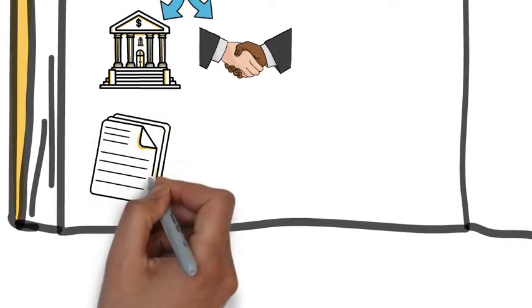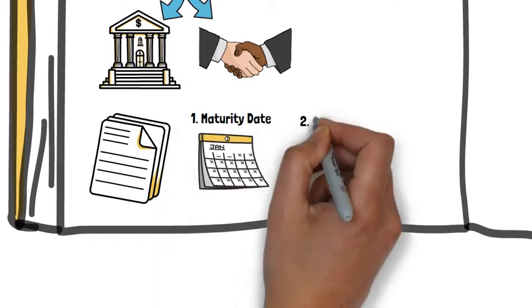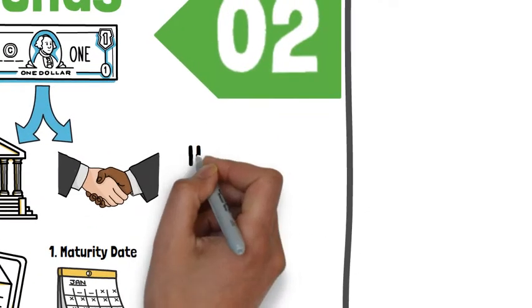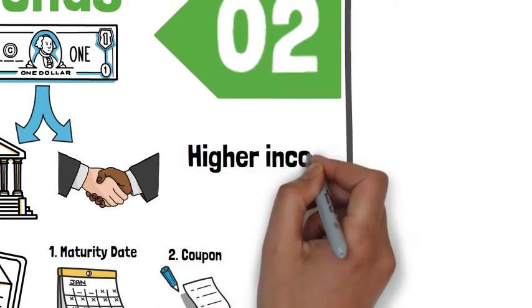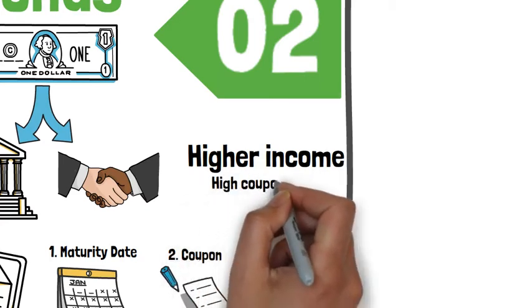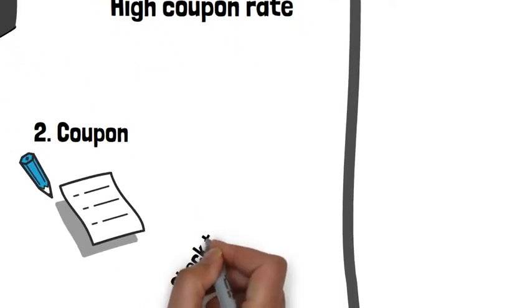Each bond has two features: maturity date, which is the date that you will be getting your money back, and coupon rate, which is the interest rate you're getting for holding the bond. If you want to get higher income from investing in bonds, always search for the highest coupon rates. If you want to know how to invest in bonds, check the description box below.